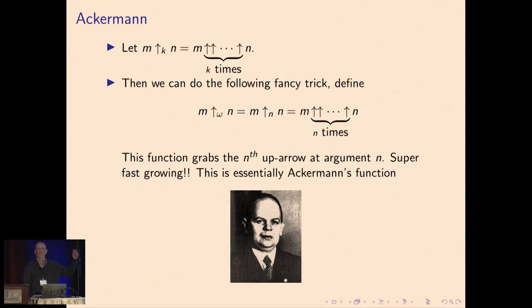Let's refine the notation a little bit and use arrow sub k to denote k iterations of the arrow. And then we can do this fancy trick of having arrow sub ω applied to m and n be iterating the arrow n times.